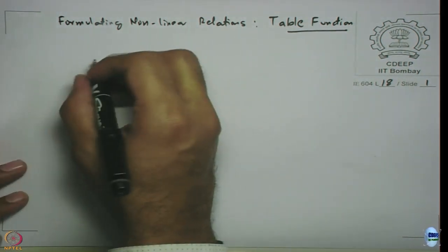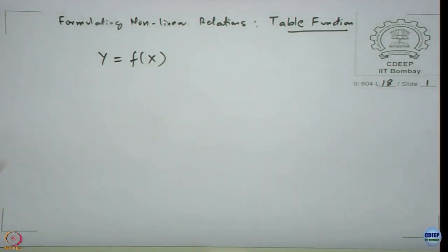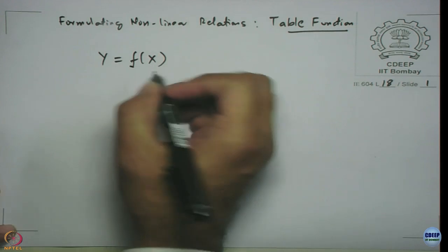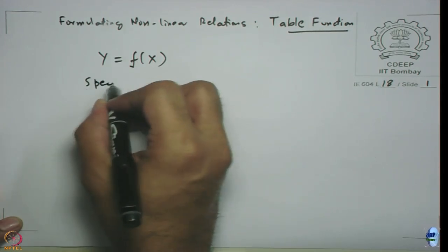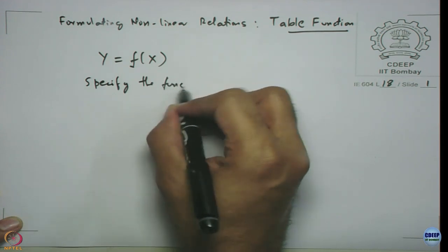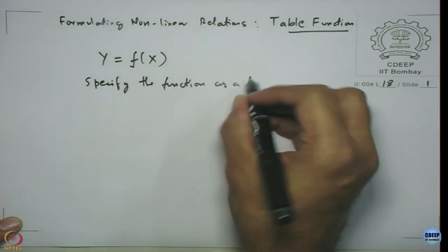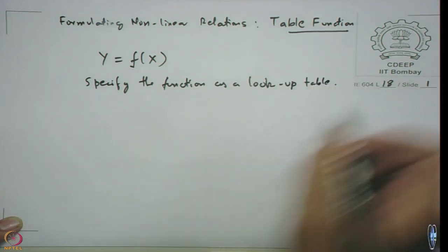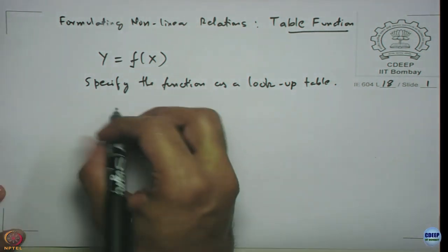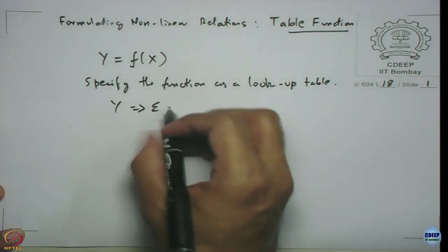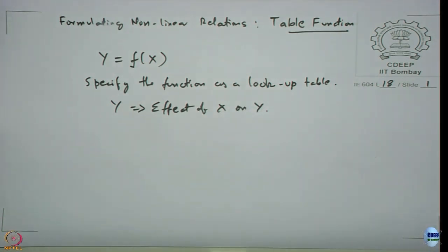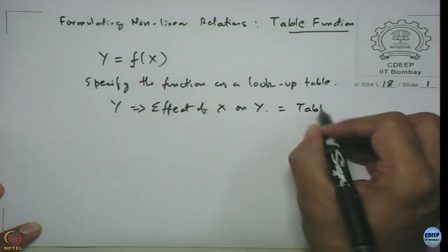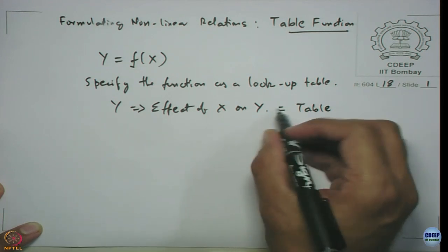Many functions are of the form y = f(x), some function of x, but we do not know the exact analytical expression for this function. So we specify the function as a lookup table — we just say that y is obtained as an effect of x on y, which we specify as a table.